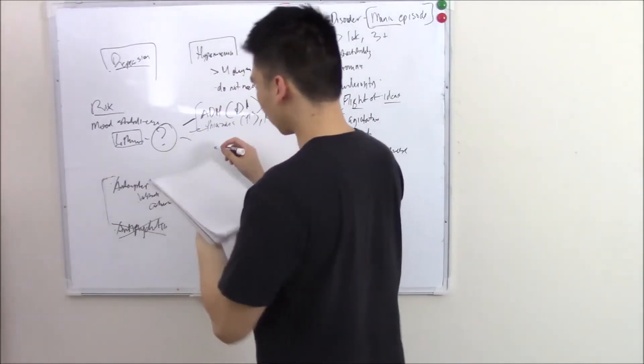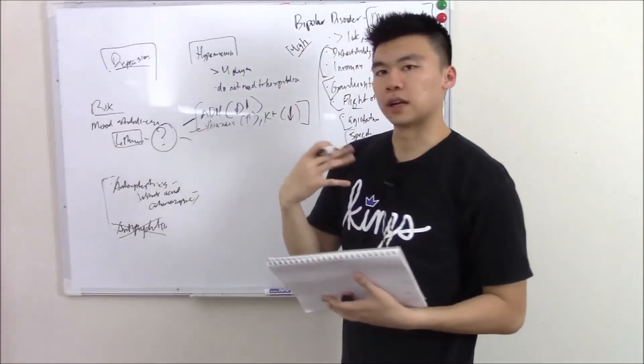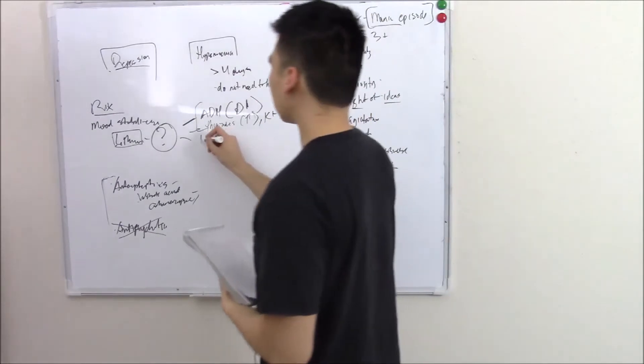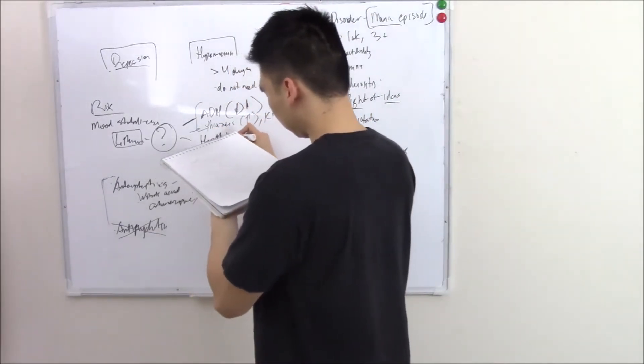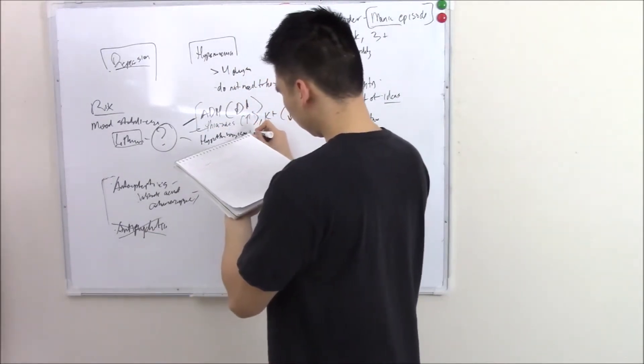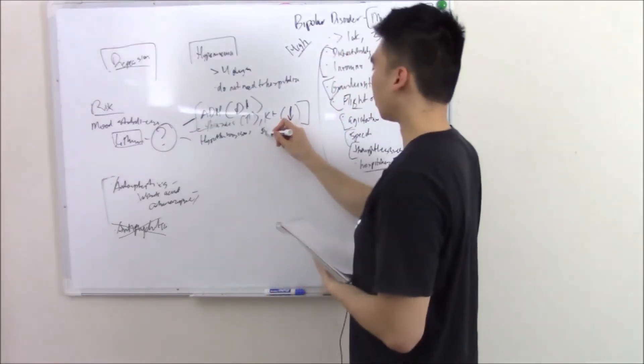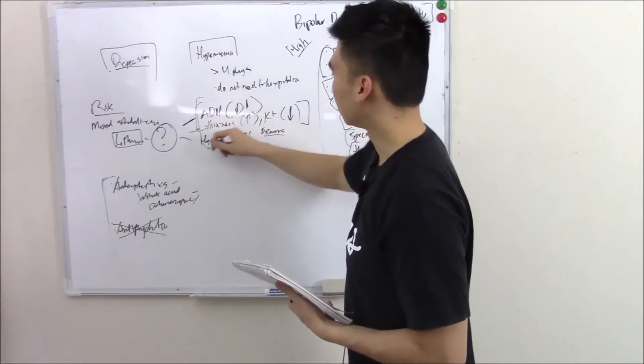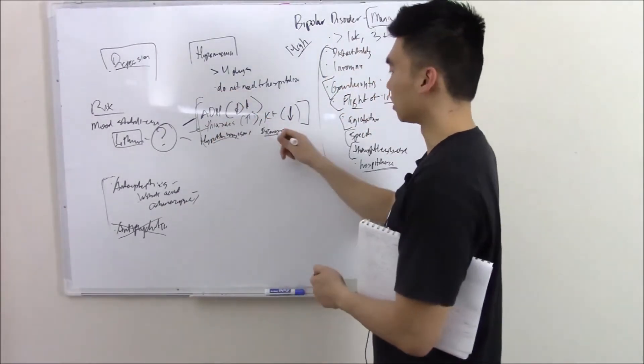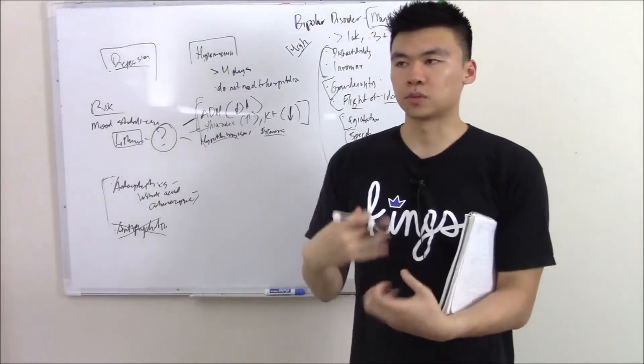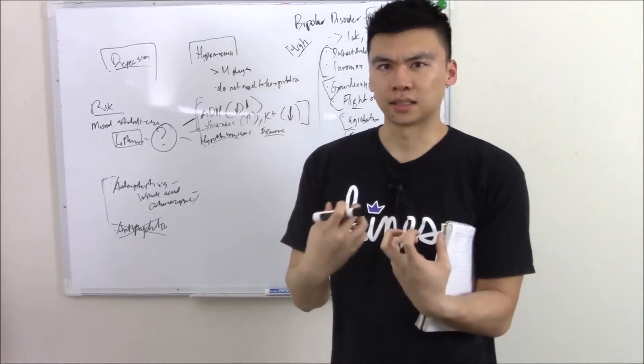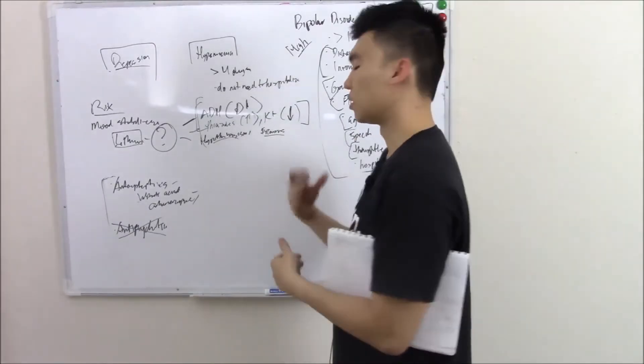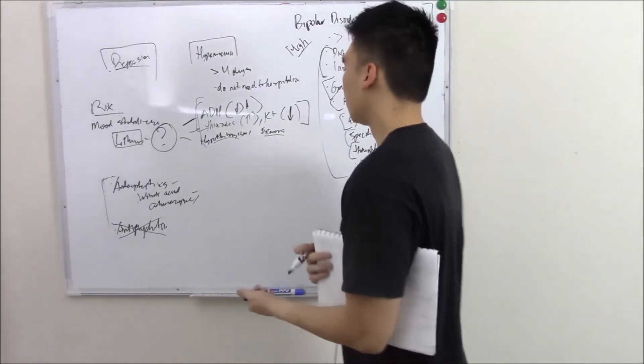Lithium doesn't only work there. It can lower the effect of TSH and thyroid hormones and cause hypothyroidism. It can cause tremors. Tremors are very common. Hypothyroidism and diabetes insipidus most people remember, but tremors is another big one that you should remember. And if the tremors become consistent and really pervasive, then you might have to add beta blockers. That's tremors.